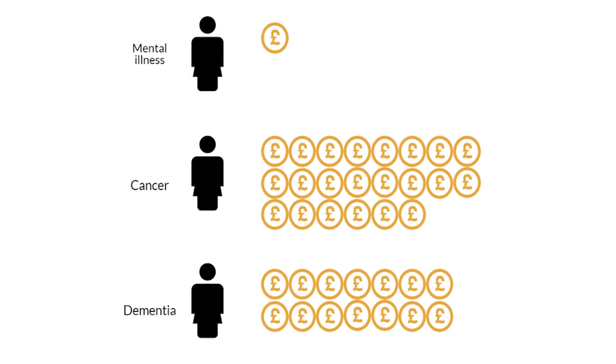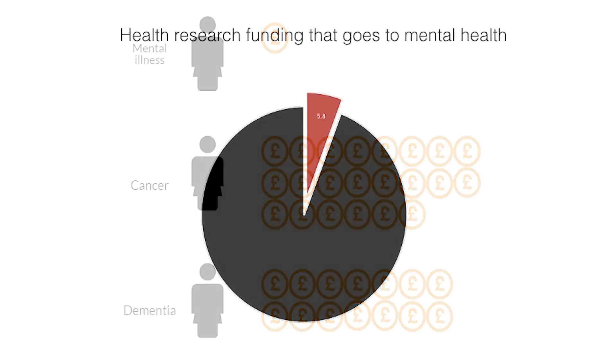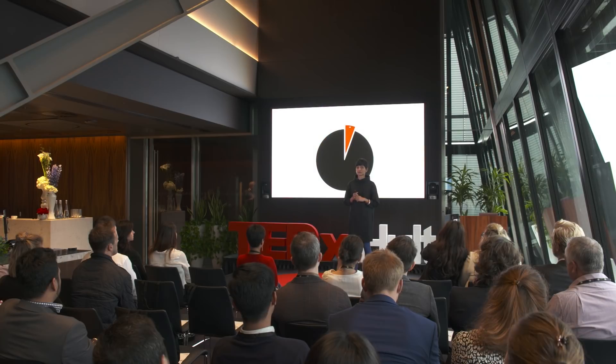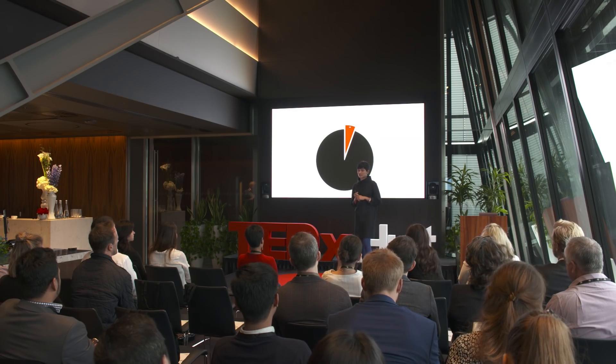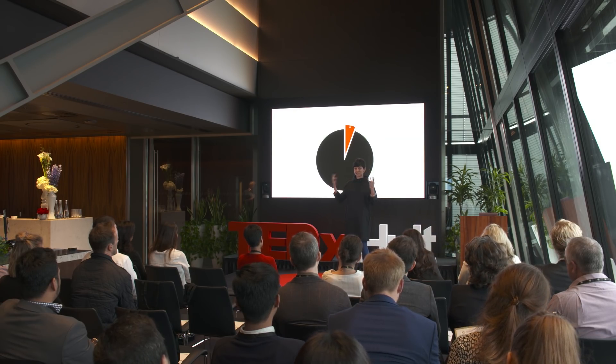The other big problem is investment. This is how much we invest in all mental illnesses combined compared to, in this case, just cancer and dementia. To take the bigger picture of all health research funding in the UK, the tiny red sliver you see there is how much we spend on all mental ill health research. So contrast this with what we saw earlier — this is a substantial cause of disease burden, it has enormous cost to the economy, it affects most of us at some point in our lives, but we do very little about it.